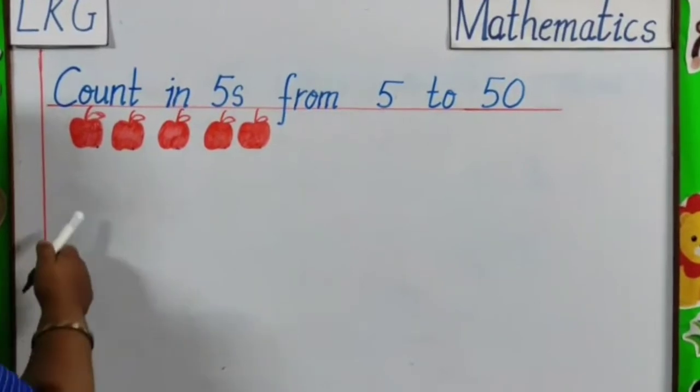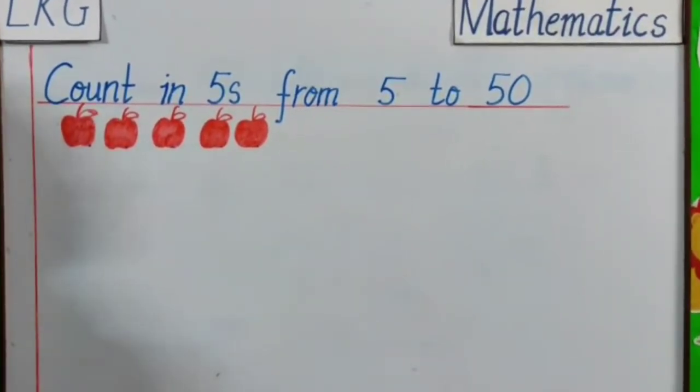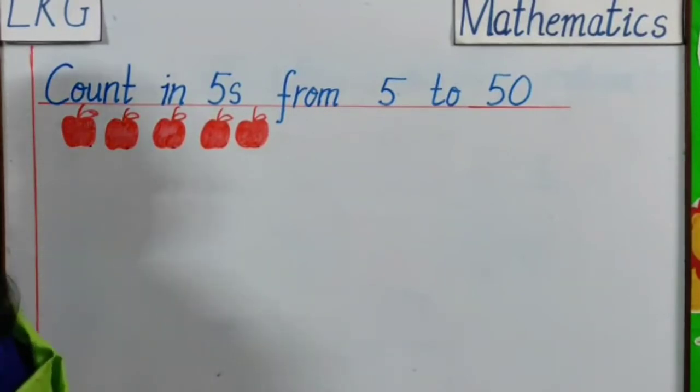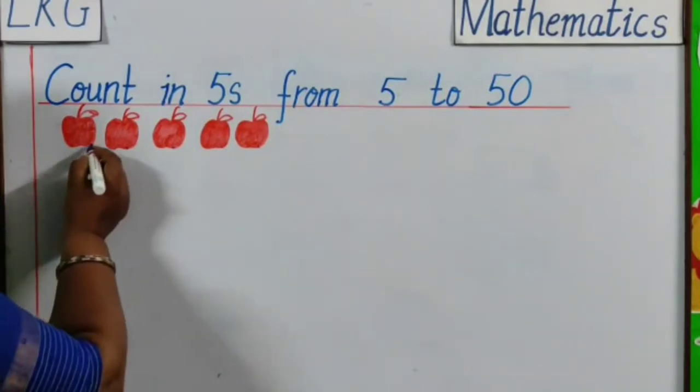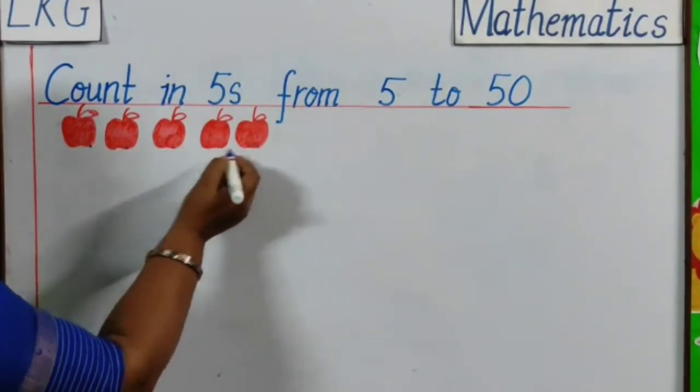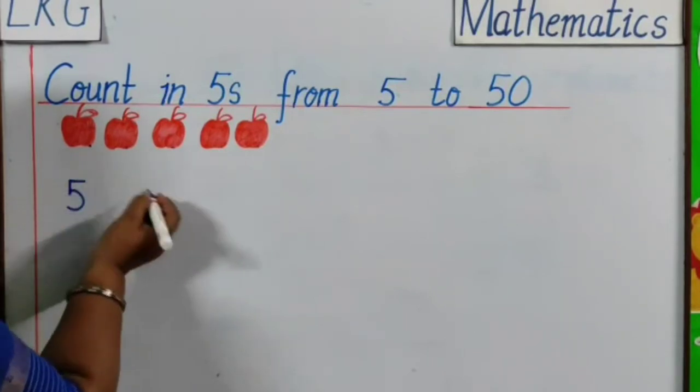Children, you can see I have drawn 5 apples here. You can draw anything, any object like balls, stars, etc. Let's start counting. 1, 2, 3, 4, 5. So, our first answer is 5.